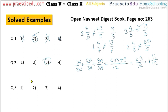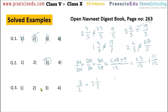Question number 3: which of the following fractions is the smallest? We will convert each option to a mixed fraction. Option 1: 7 by 2 — 2 threes are 6 with remainder 1, giving 3 and 1 by 2. Option 2: 16 by 5 — 5 threes are 15 with remainder 1, giving 3 and 1 by 5.